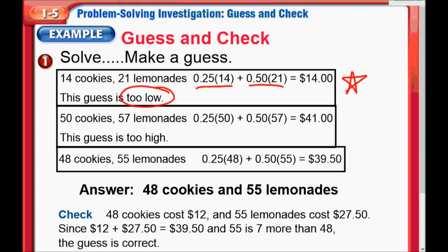My next guess is 50 cookies and 57 lemonades. Again, I have to have a number for lemonades that's seven more than the number of cookies. 25 cents for the 50 cookies, 50 cents times the 57 lemonades — now I end up with $41 on this problem. Now I'm too high, but not by much, so I know I need to drop my guess, but not by a whole lot.